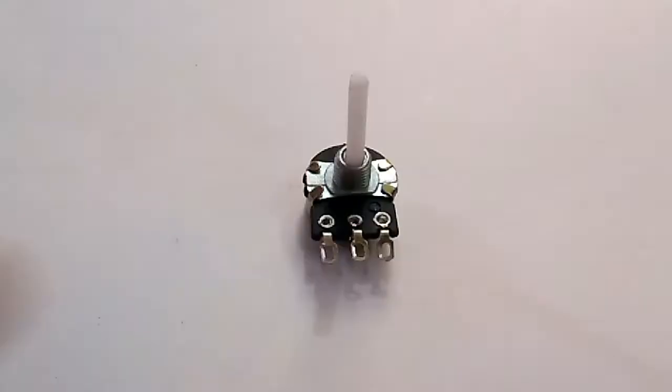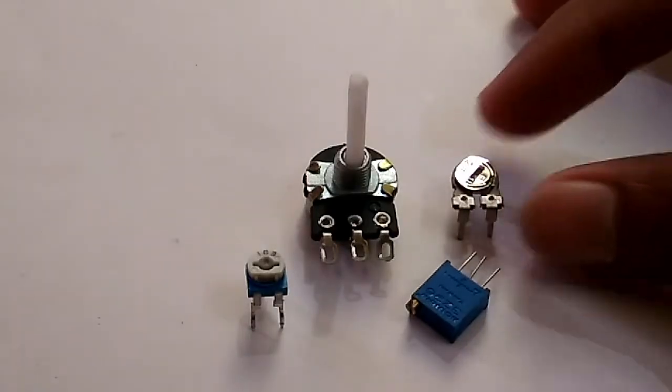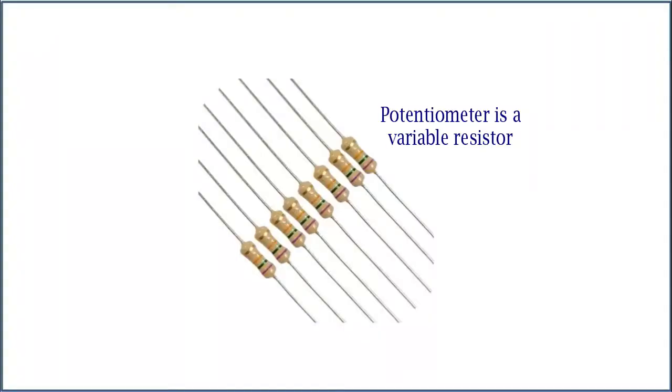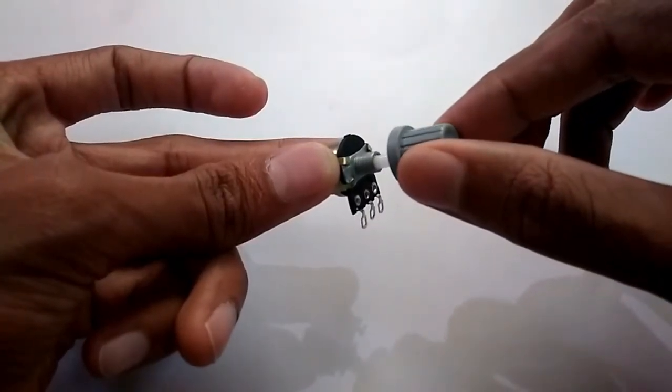As an electronic component, potentiometers come in various shapes and sizes. A potentiometer is a variable resistor, which is a resistor whose resistance value can be varied from zero to a maximum value which is marked on it.